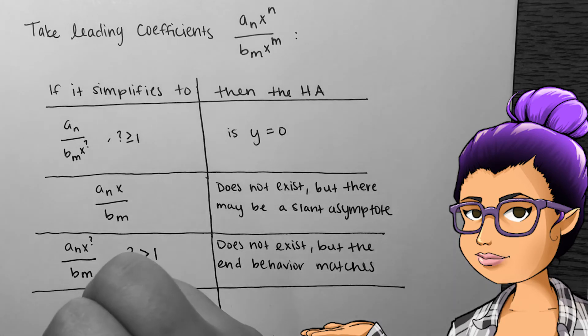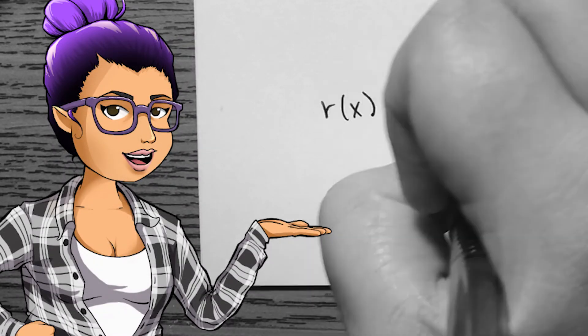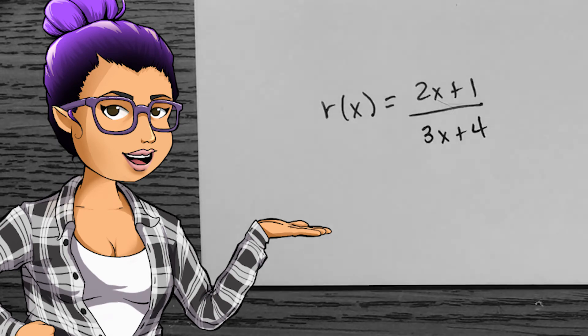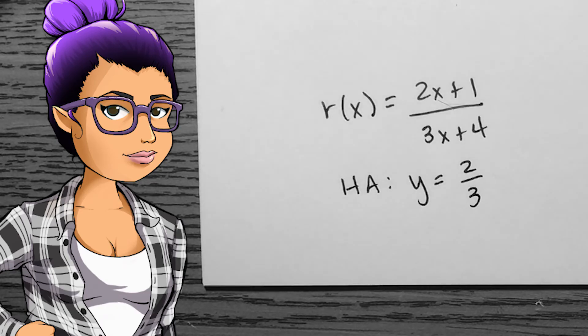If the two leading terms are divided and simplified, leaving us with something that is constant, that constant is where we have a horizontal asymptote. If R of x is 2x plus 1 divided by 3x plus 4, the horizontal asymptote is y equals 2 over 3.